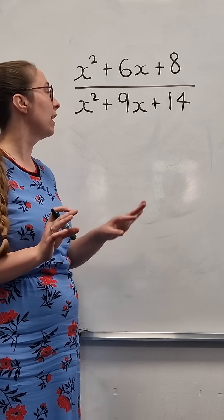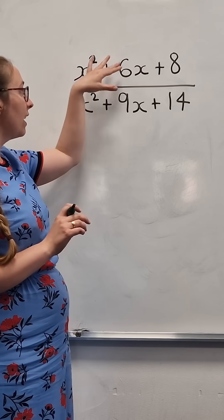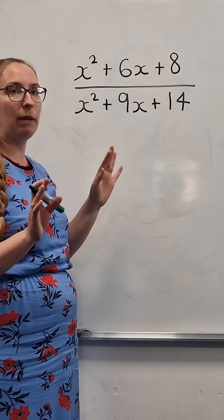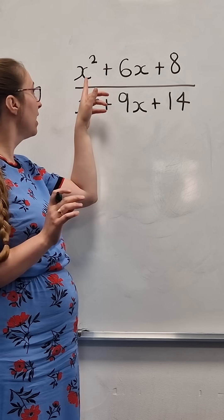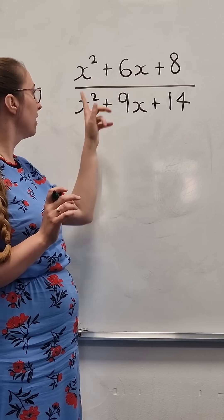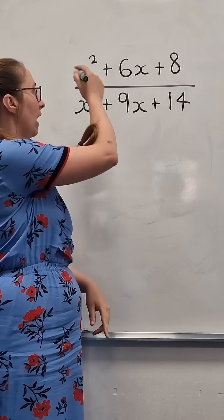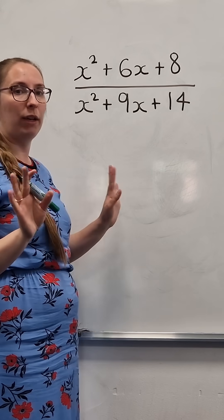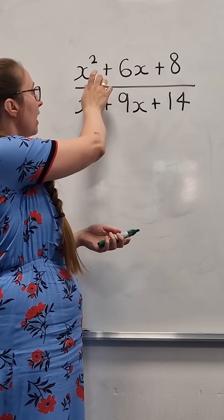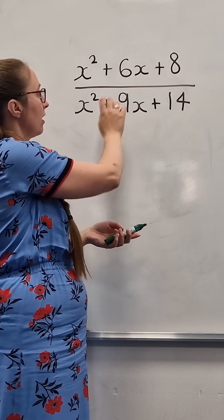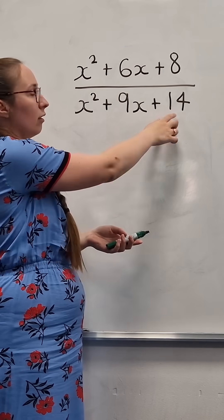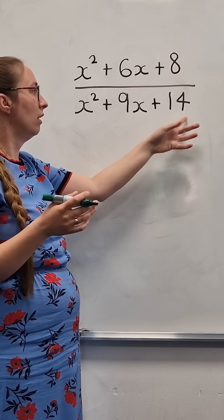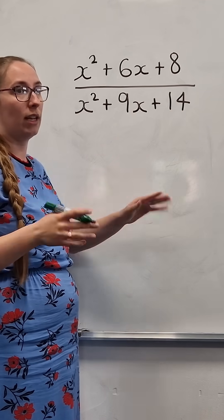Here's a mistake that people always make. Let's say you've been asked to simplify this algebraic fraction. What lots of people will do is they'll see that this has an x in, this has an x in, this has an x in, this has an x in, and they'll just start crossing off x's everywhere. We cannot do this. The reason is because x is not a common factor with each term. You can see there's no x here — this is just a constant 8, and here this is just a constant 14.